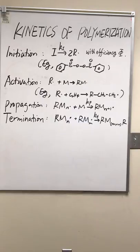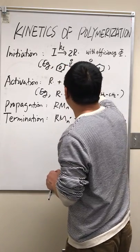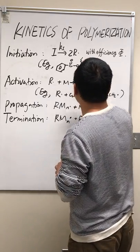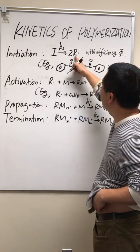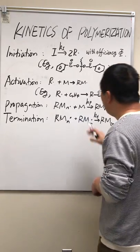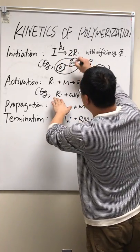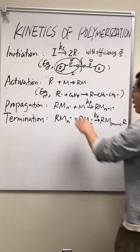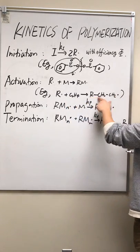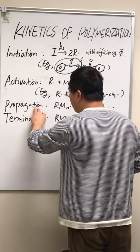Today I will talk about the kinetics of radical polymerization. The initiator I is supposed to be fairly reactive — we can easily break this oxygen bond to create two radicals denoted by R. The R radical can then react with a monomer in an activation step. For example, an R radical reacts with an ethylene molecule and becomes R bonded to CH₂CH₂, with the radical now on the C₂H₄ end.